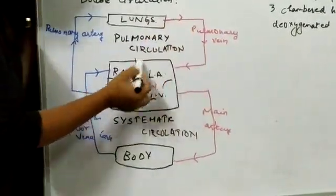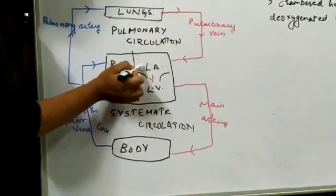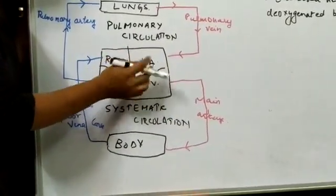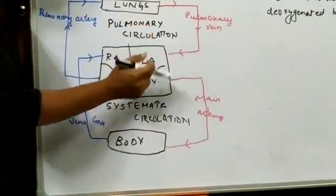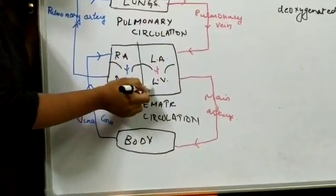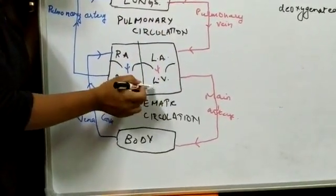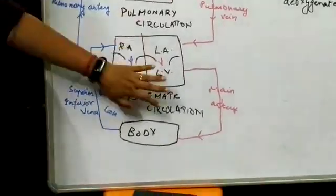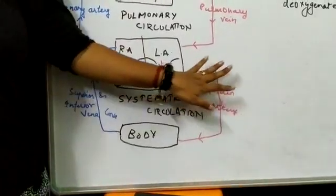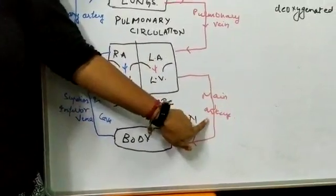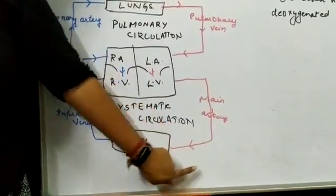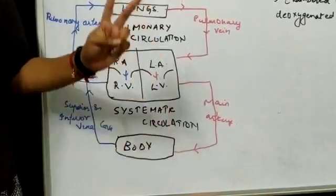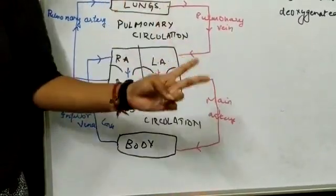Pulmonary vein is oxygenated blood ko vaapas left auricle mein le jaati hai. And as soon as the left auricle contracts — jaisi hi left auricle ne contract kiya — the blood rushes to the left ventricle. Left ventricle ke through main artery, oxygenated blood ko different body parts tak carry kiya jaata hai. So, circulation do baar hoti hai.